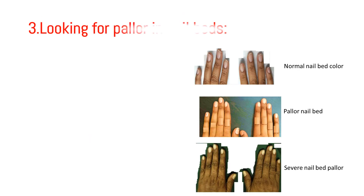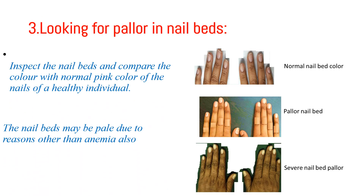The third site is looking for pallor in the nail beds. Inspect the nail beds and compare their color with the normal pink color of the nails of a healthy individual. Note that nail beds may be pale due to reasons other than anemia. We can see normal nail bed color in the upper image, pallor in the nail bed in the middle, and severe nail bed pallor in the lower image.